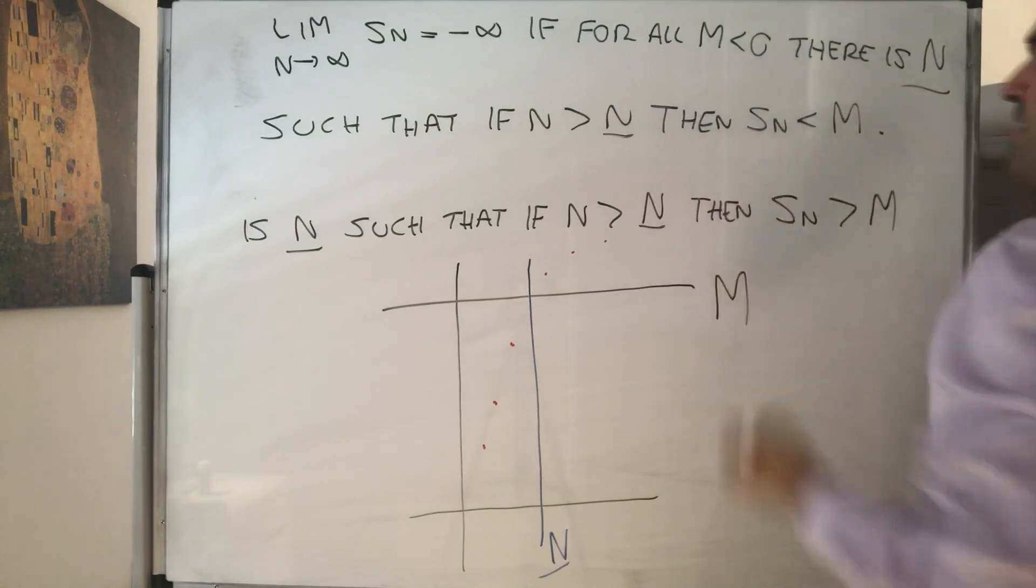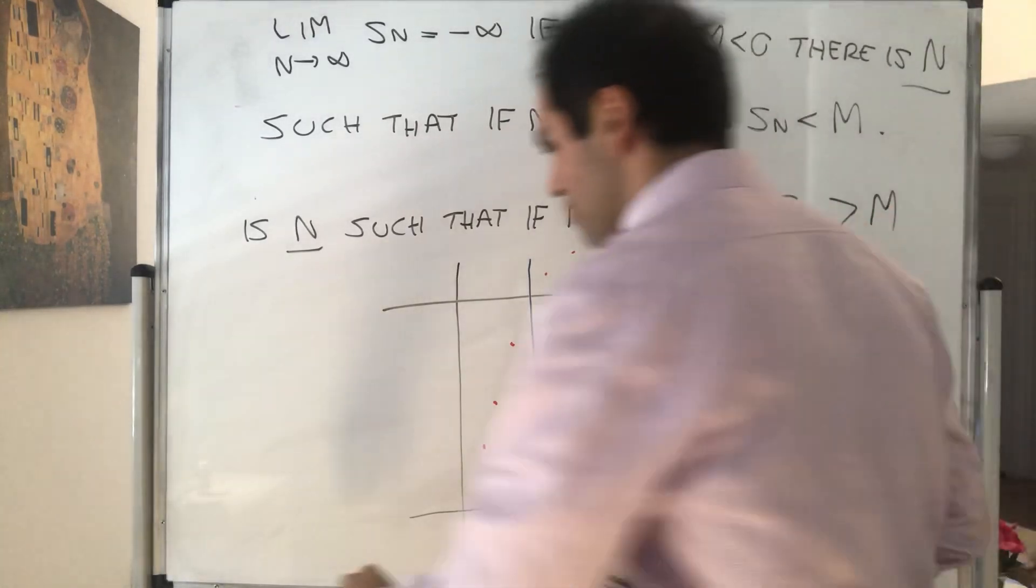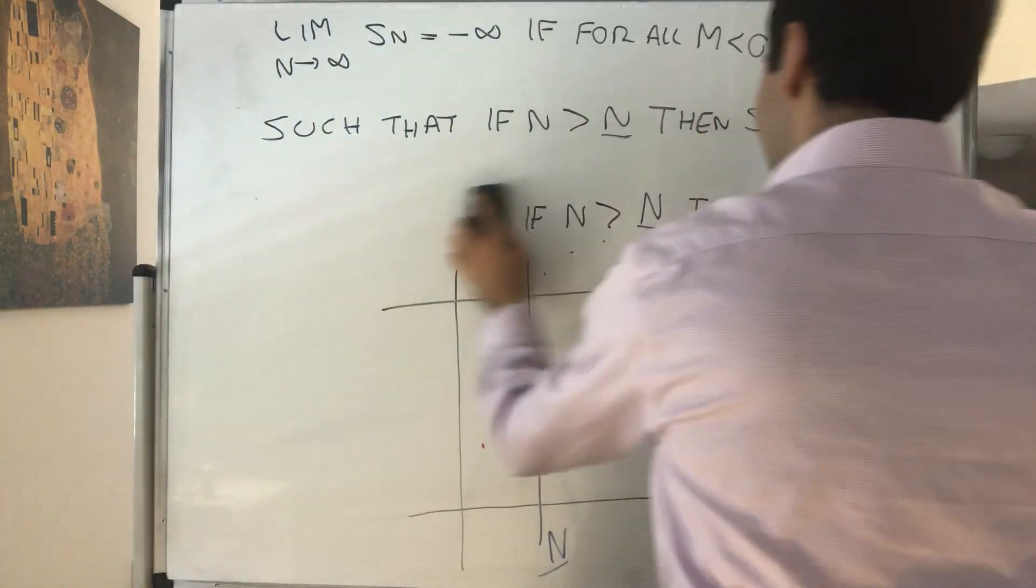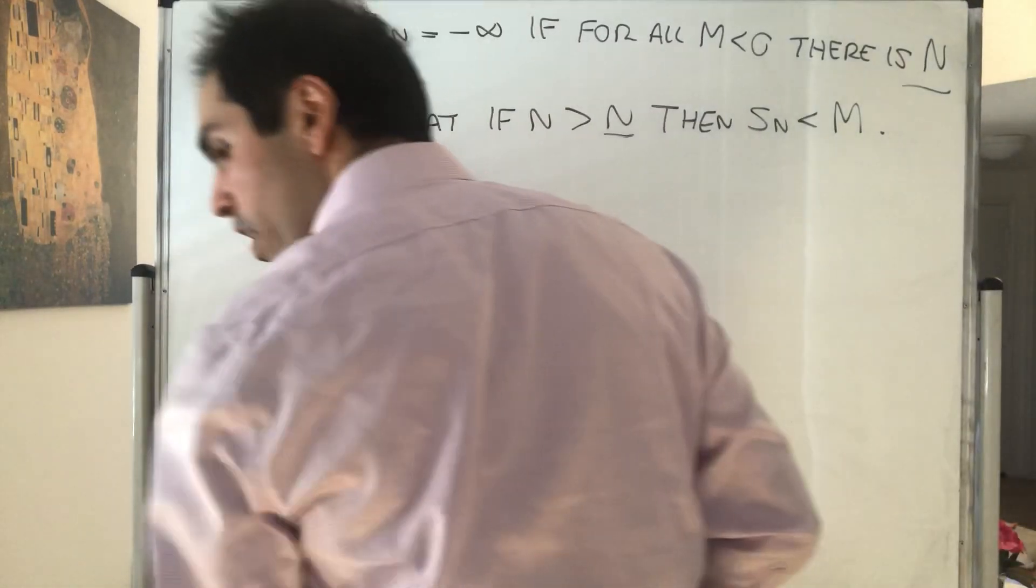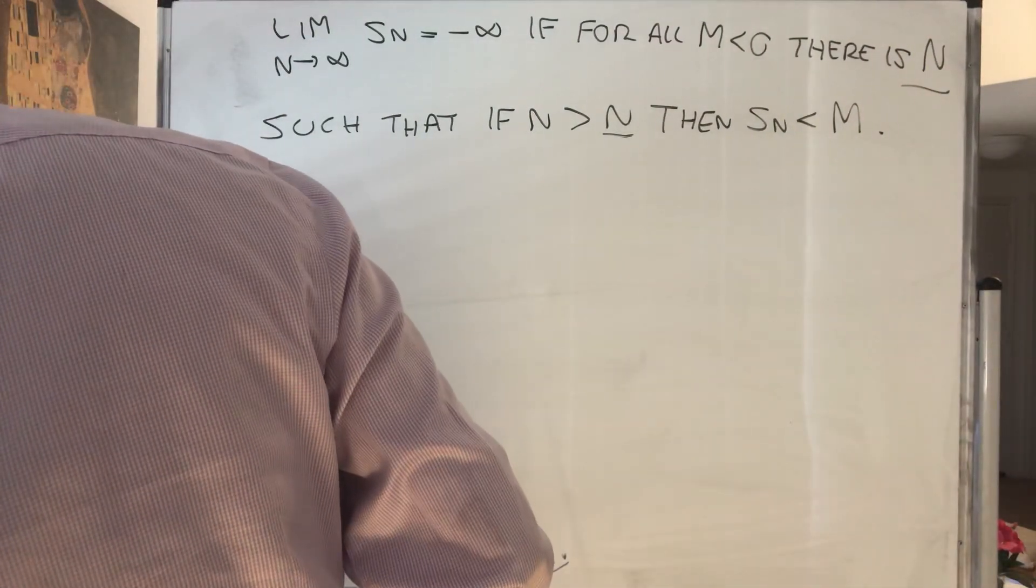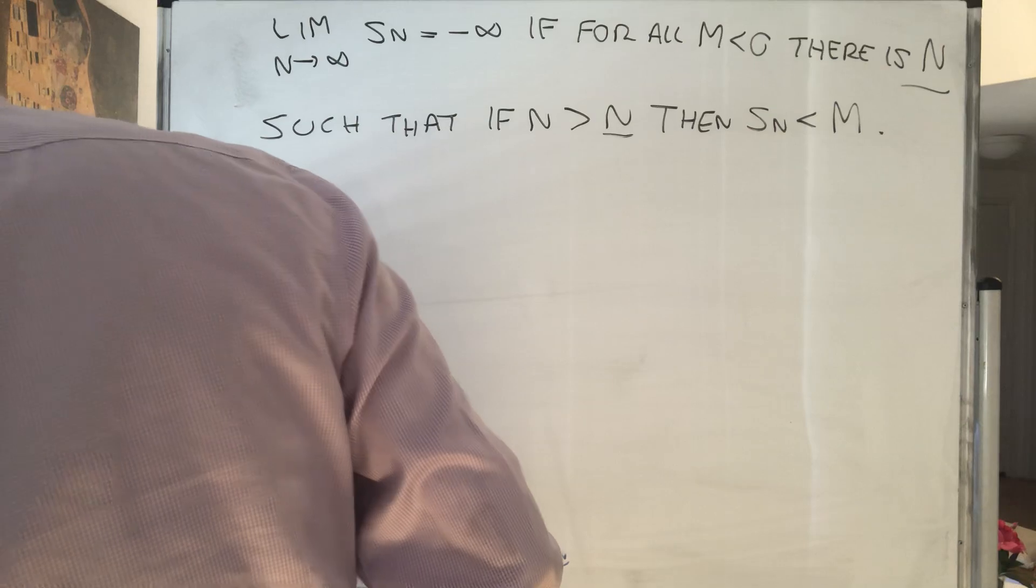So if I tell you can your sequence be less than minus a billion, yes, eventually. And today, in today's tenth example, I will show you an example of showing how a limit is infinity. So consider this one.